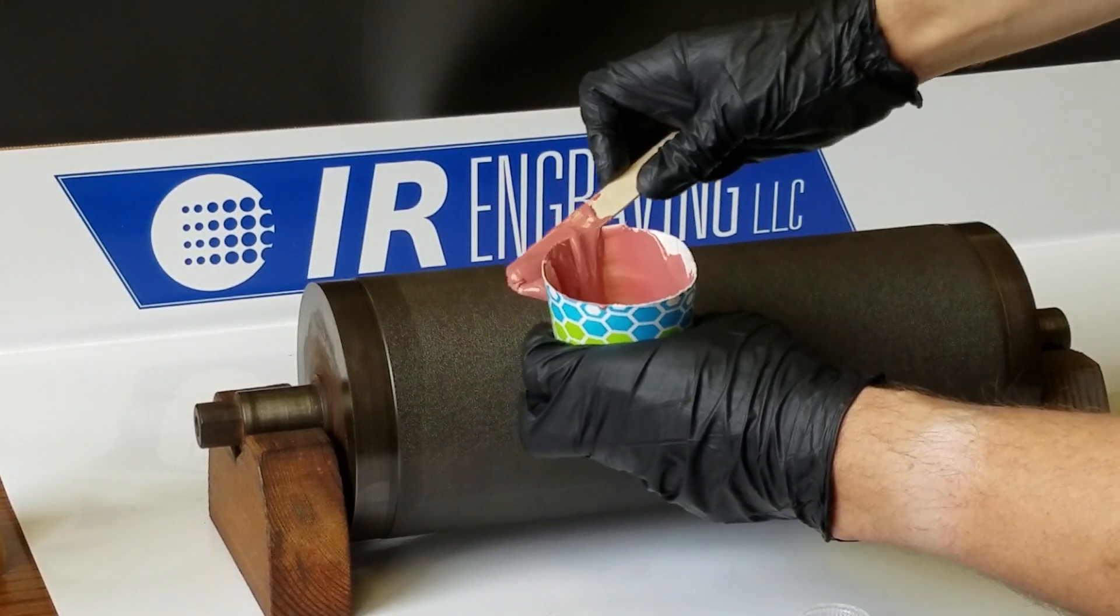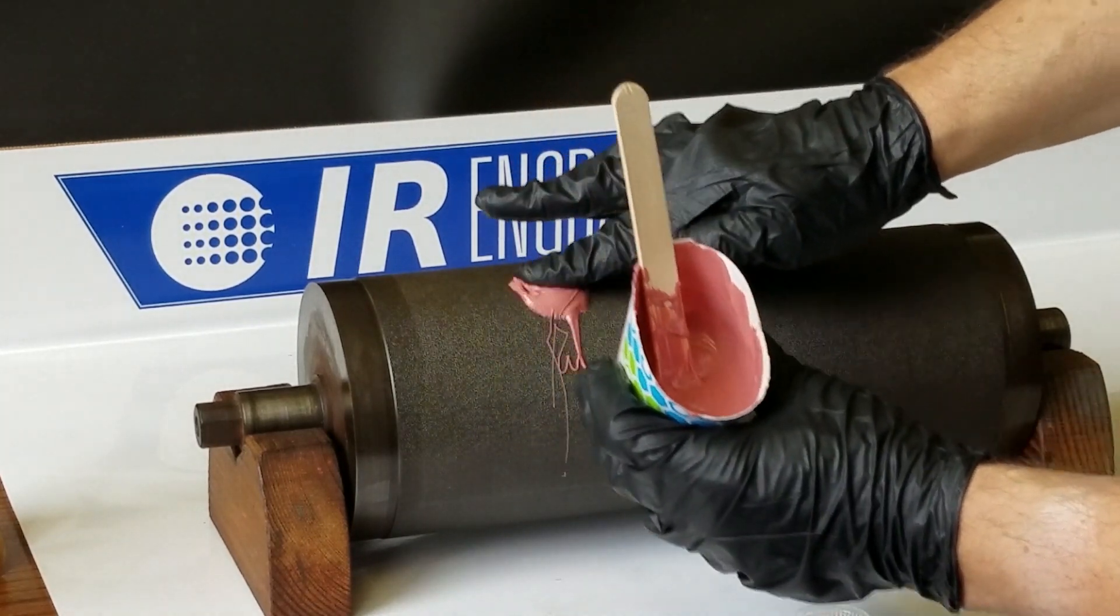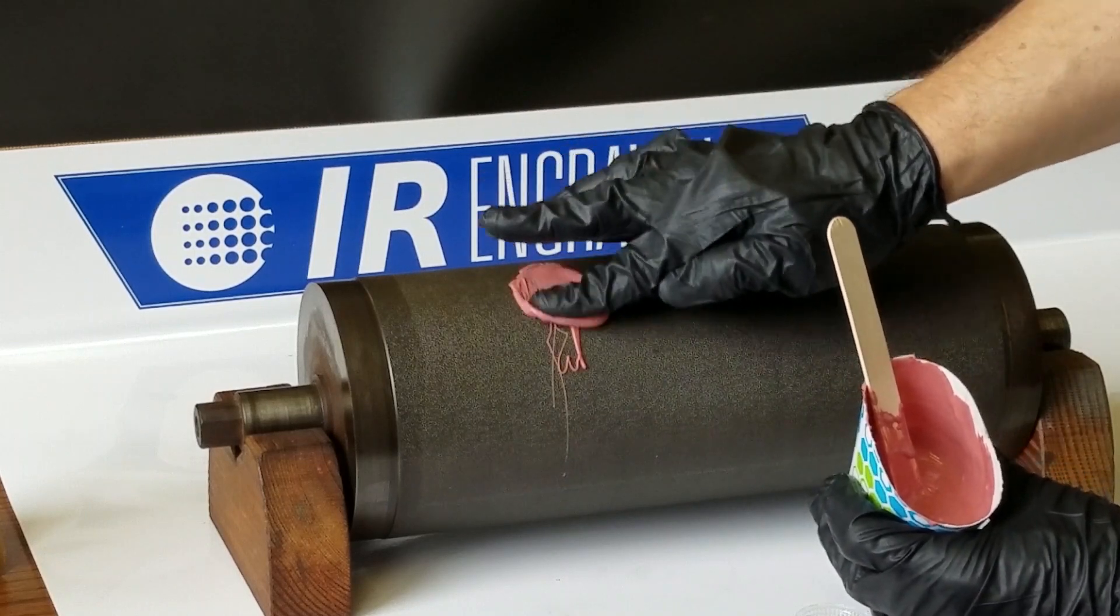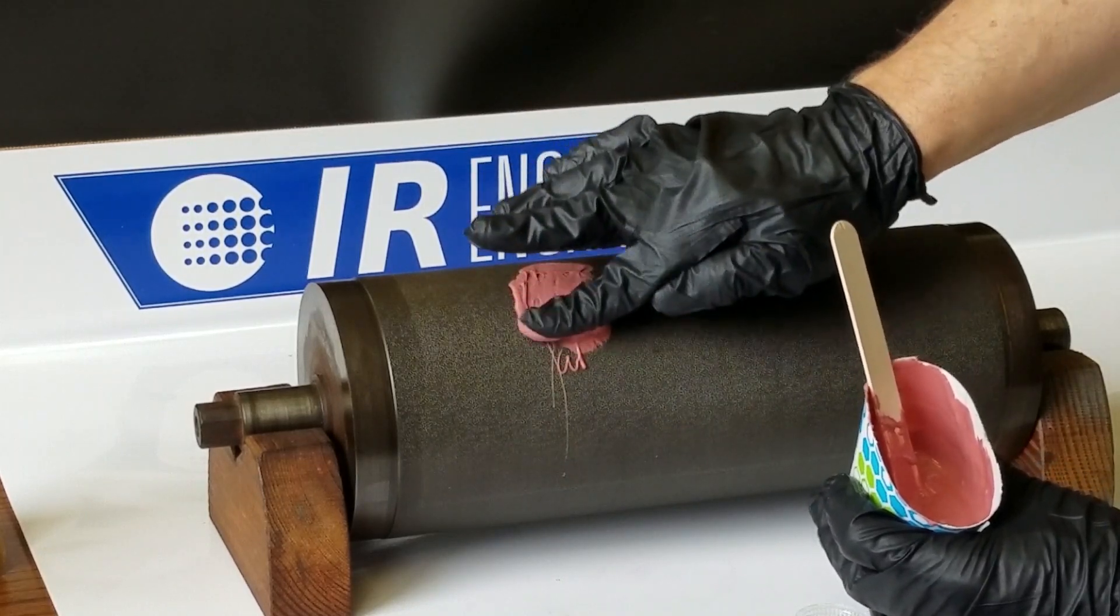Pour a small amount on the surface and quickly rub into the pattern using a gloved finger. The goal is to eliminate air bubbles.